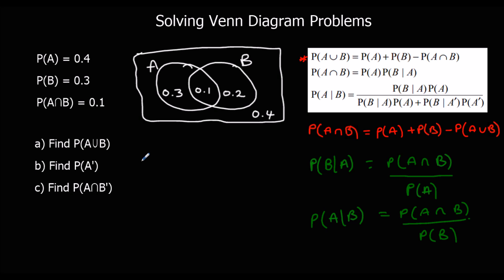The first question: find the probability of A∪B. We could use the formula: 0.4 plus 0.3 minus 0.1, which equals 0.6. Or we could just look at the Venn diagram — the two A sections and the two B sections together give a union of 0.6.